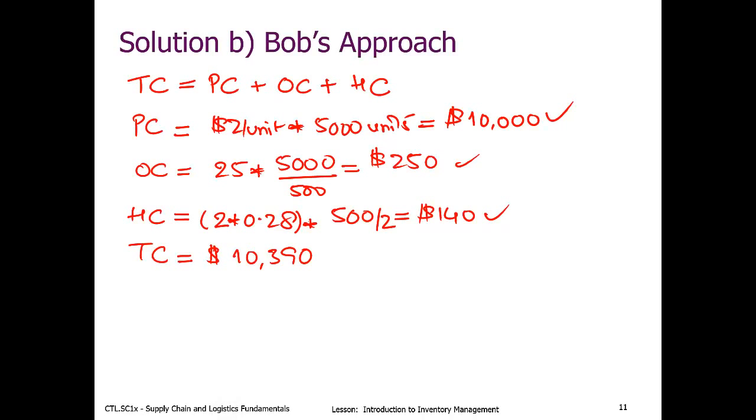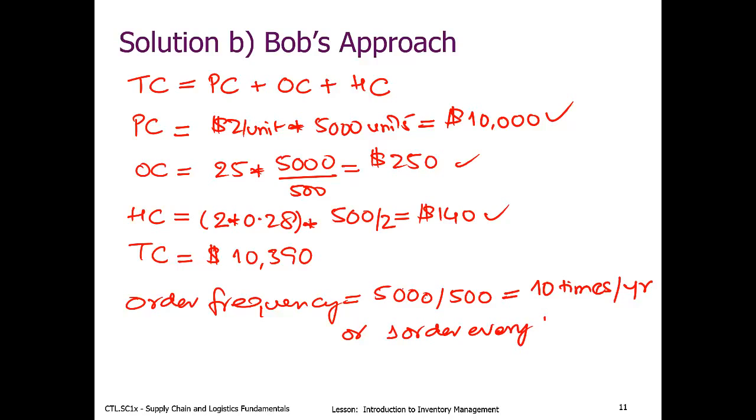How about order frequency? Can we calculate the order frequency here? Sure. So we know the demand is 5,000 units a year, and we are ordering in batches of 500. So we end up ordering 10 times per year, or one order every 1.2 months. So this is the same as part A. Nothing changed here.